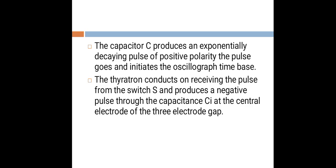The pulse goes and triggers the oscillograph time base. Thus, the thyratron conducts on receiving the pulse from the switch S and produces a negative pulse through the capacitance C1 at the central electrode of the three-electrode gap.